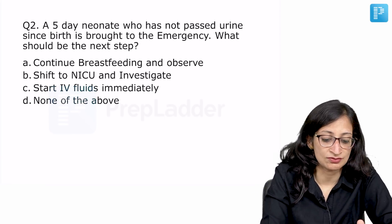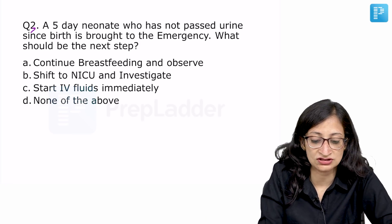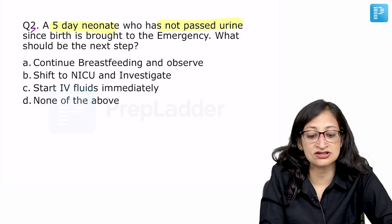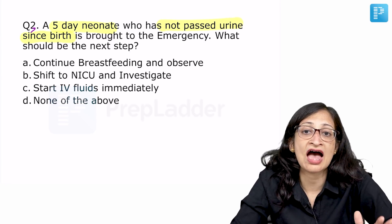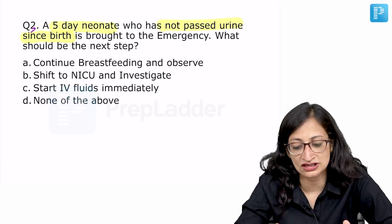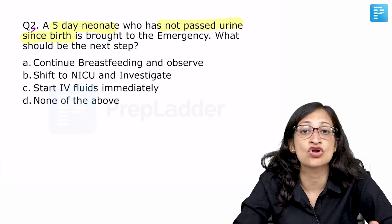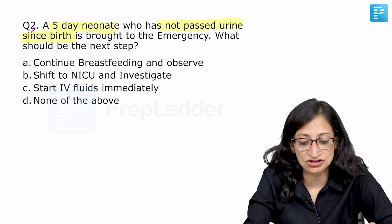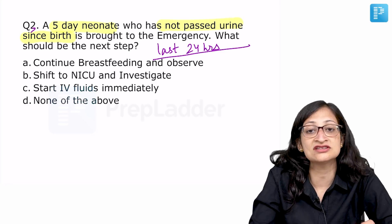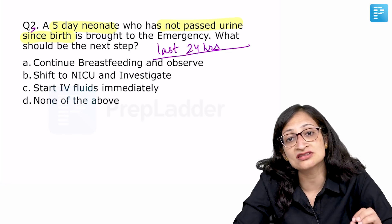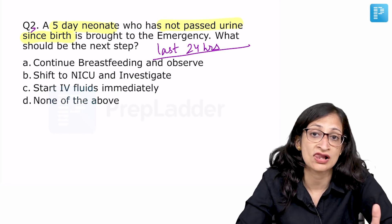Question number three: a five-day-old neonate who has not passed urine since birth is brought to the emergency. What would be the next step? There is some confusion — some students mentioned the neonate has not passed urine for the last 24 hours. If so, this fits the definition of acute kidney injury — in fact the most severe stage where there is anuria for more than 12 hours.